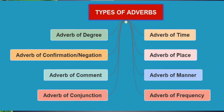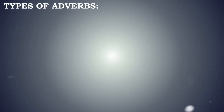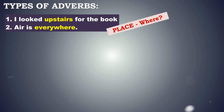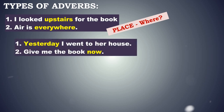There are eight types of adverbs. First: I looked upstairs for the book. Air is everywhere. These words answer the question where, so they are adverbs of place. Next: Yesterday I went to her house. Give me the book now. These highlighted words — yesterday and now — are telling us when an action took place. They tell us about the time of the action.